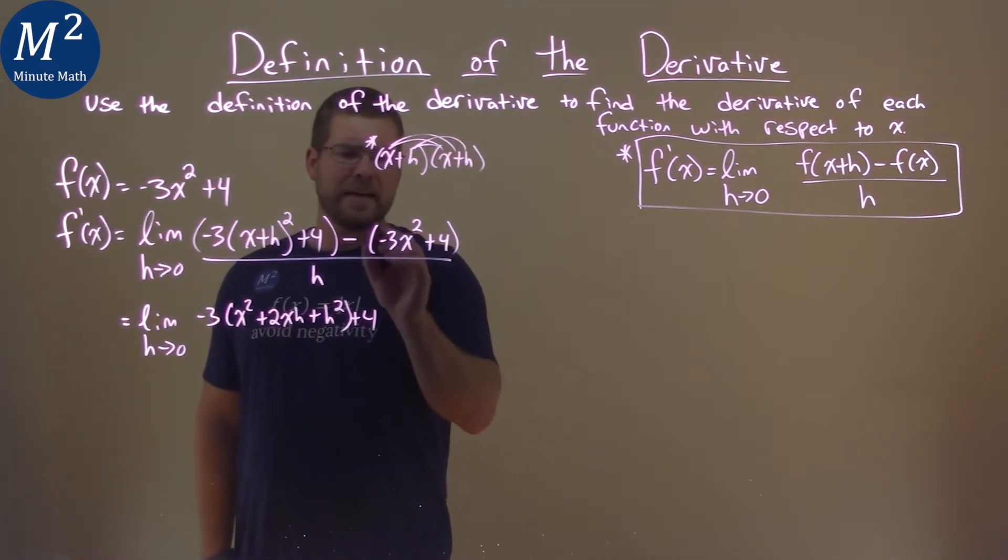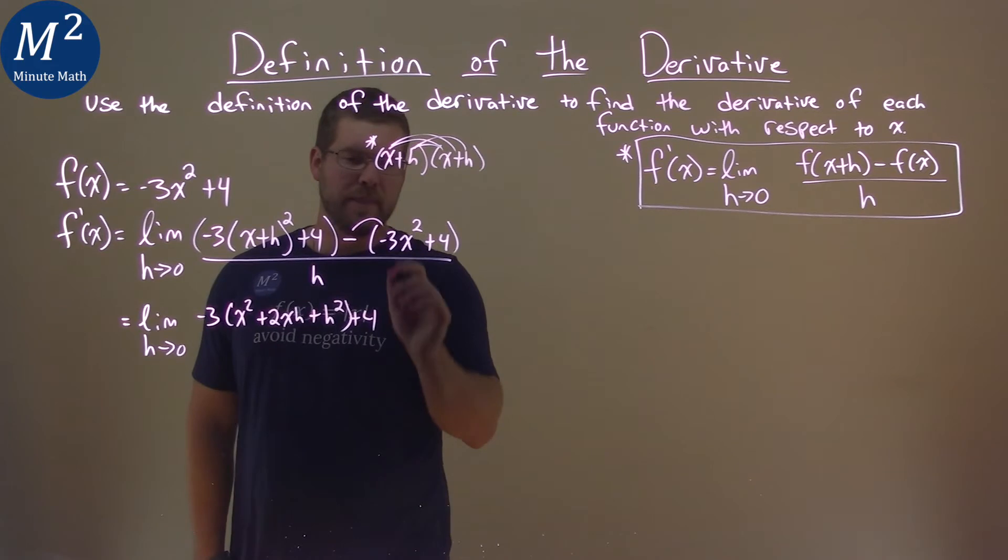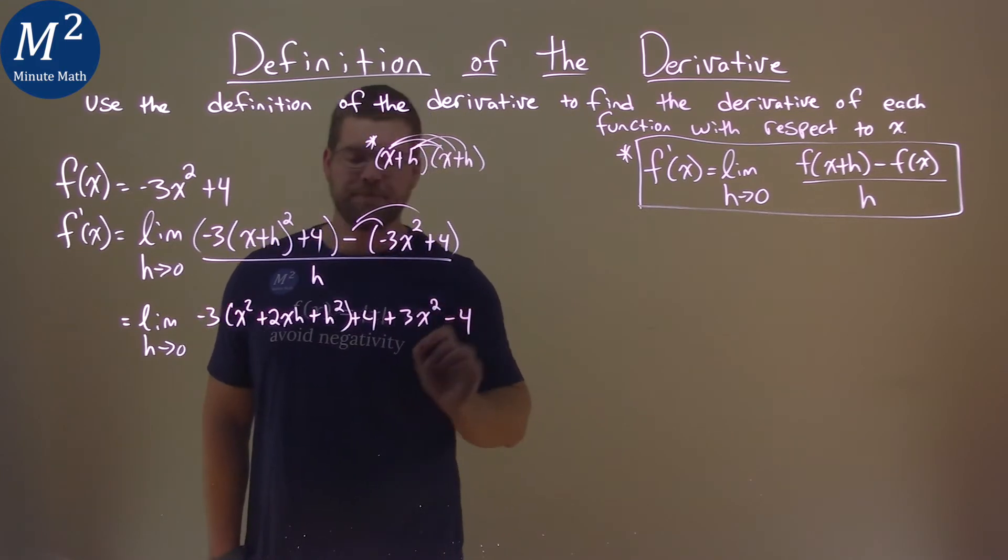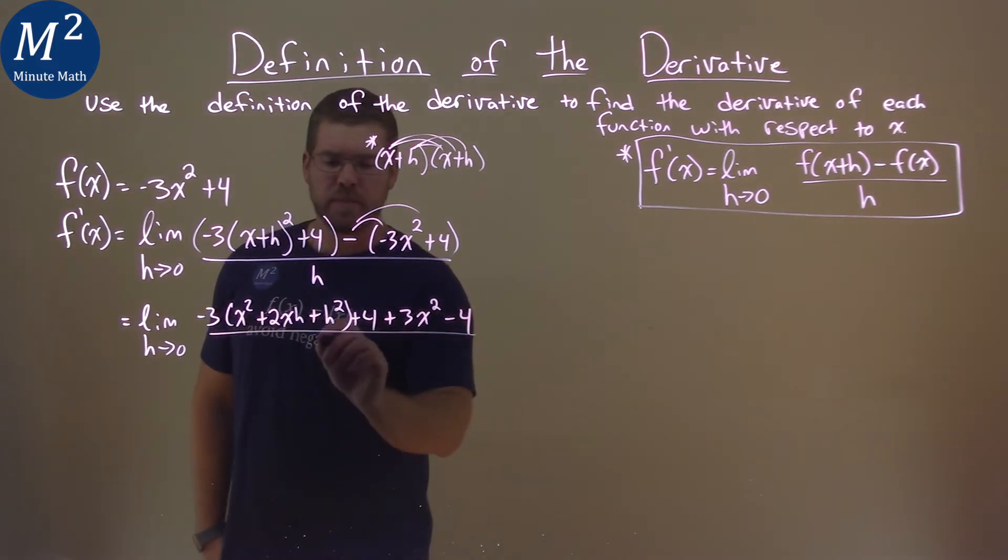All right, now there's a minus sign, or the subtraction. Let's distribute that. Minus and negative, positive 3x squared. Don't forget the square. And minus and negative 4 is minus 4. That's all over h.